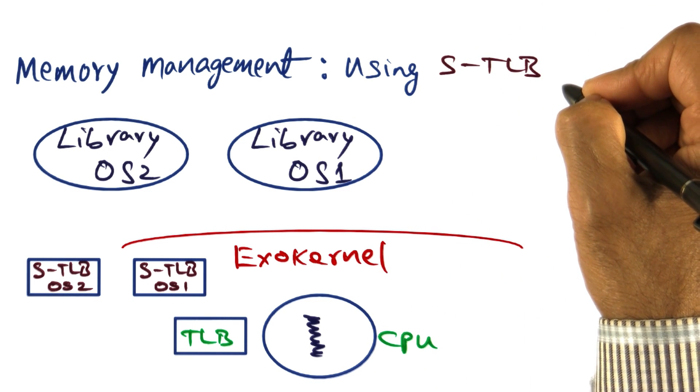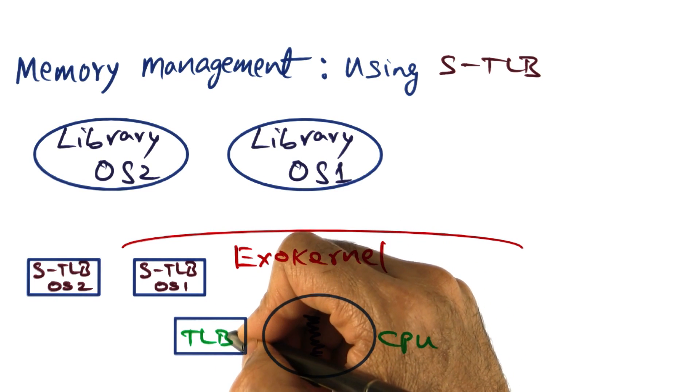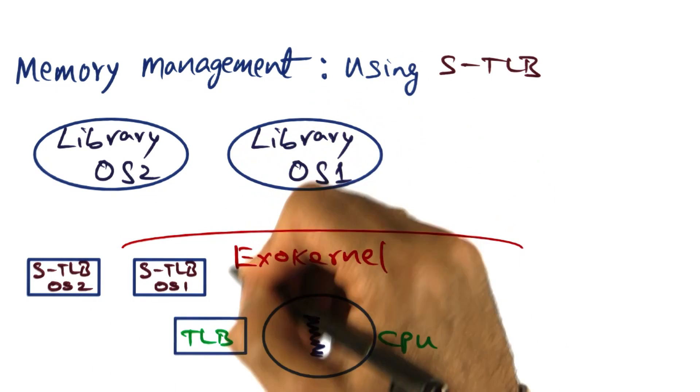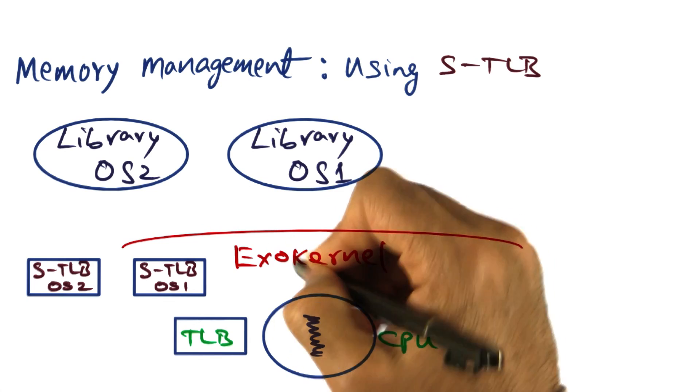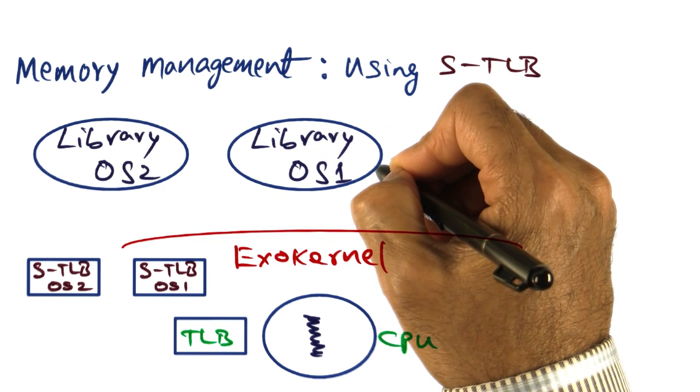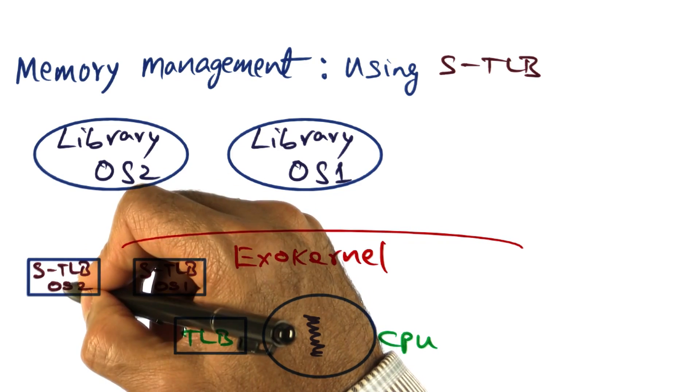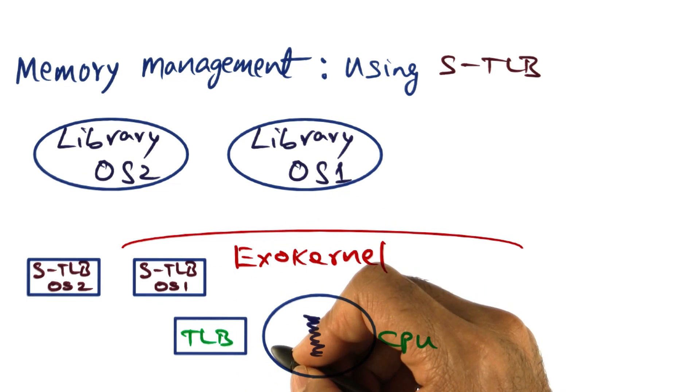The idea is quite simple. The software TLB is sort of a snapshot of the hardware TLB for each of the operating systems. So this software TLB is a data structure in the exokernel that represents the mappings for operating system one. Similarly, this data structure represents the mapping for library operating system number two.